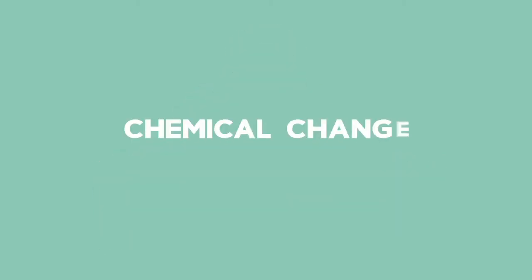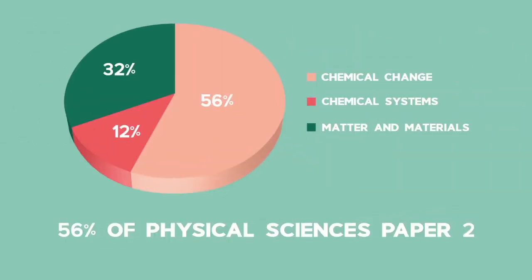Chemical change is roughly 85 marks in the final exam, which is 56% of physical sciences paper 2. Chemical change does not include rates and equilibrium, but electrochemistry does play a massive part in this section.